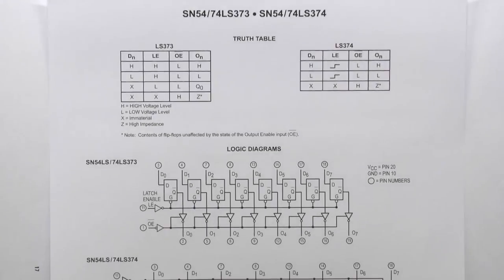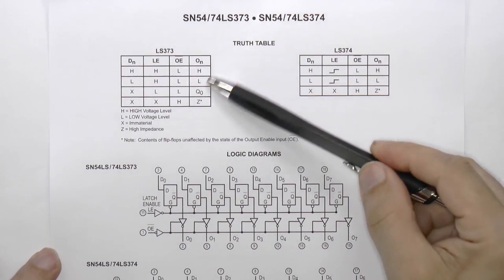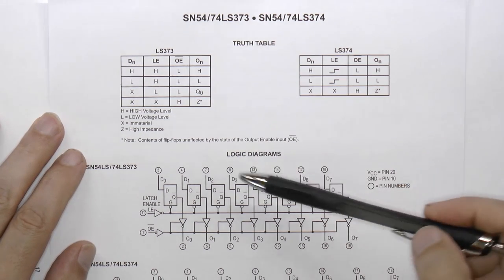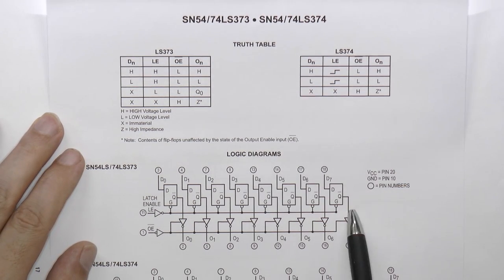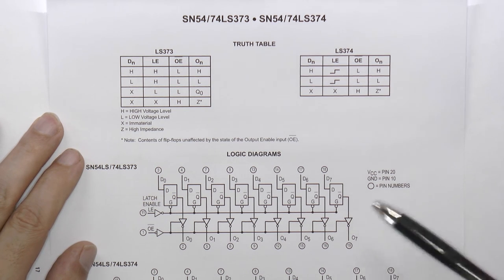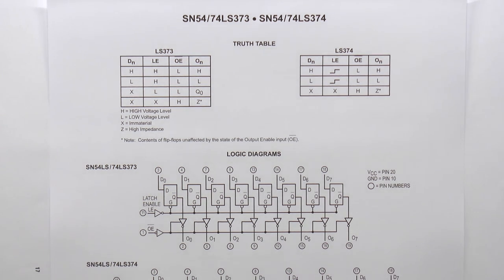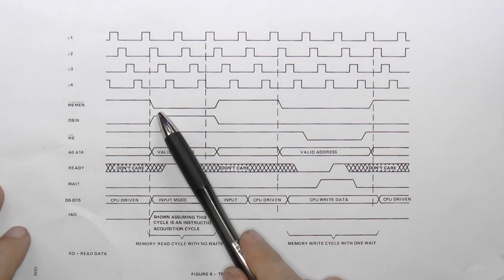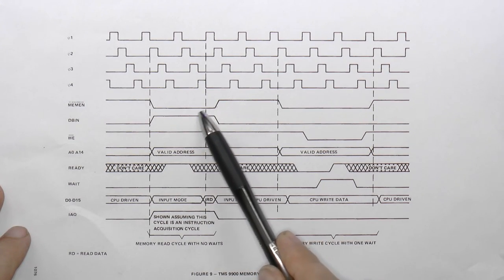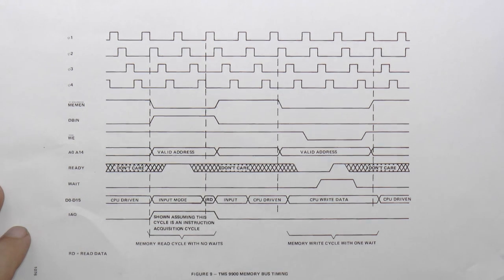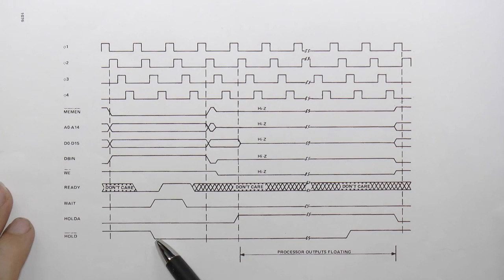A transparent latch like the 74373 allows the data through transparently until disabled, at which point the data is latched. So we need a CPU signal we can use to indicate that the address lines should be latched. This memory enable line looks useful. When it's low, the CPU is accessing memory, so the address lines have to contain something meaningful. So all we need to do is invert this signal and use that as the latch enable signal.